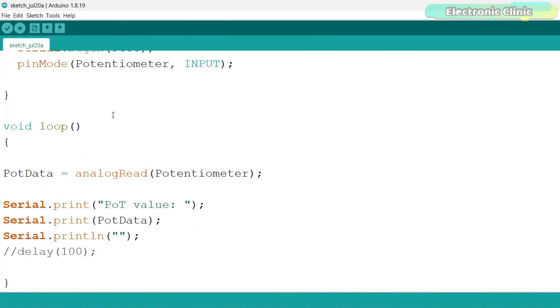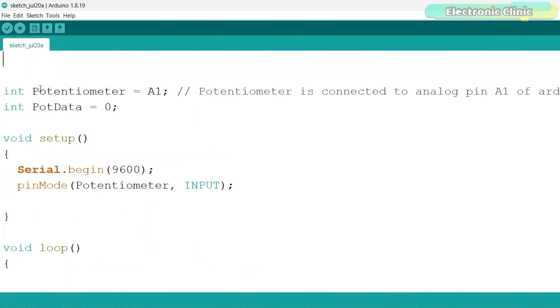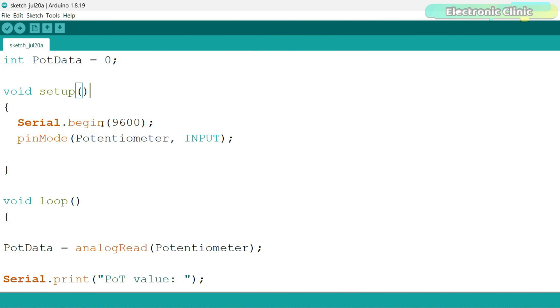The purpose of this program is to read the potentiometer and print the value on the serial monitor. The potentiometer is connected to the Arduino analog pin A1. The potentiometer value is stored in the variable pot data. Inside the setup function, first we activate the serial communication. 9600 is the baud rate.